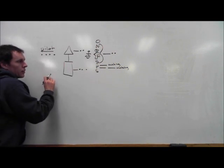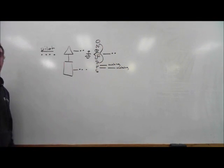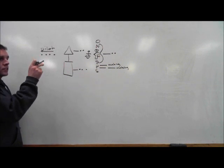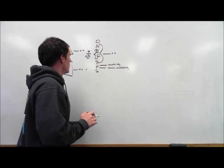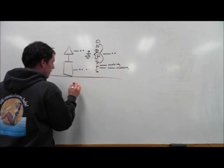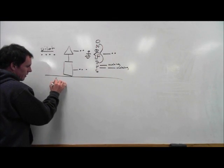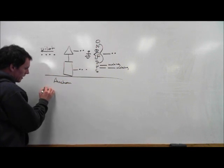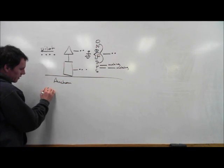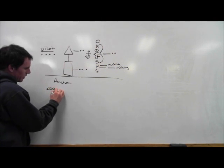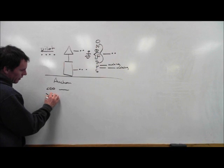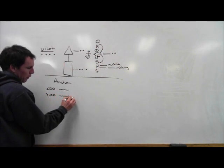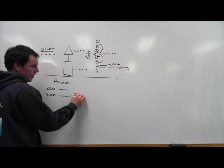These are vessels underway in restricted visibility. Whistle signals at not more than two minute intervals. And then we have our anchor. Anchored, which is a bell. Less than a hundred, rapid ringing of a bell. Over a hundred, rapid ringing of a bell in the fore part, rapid gonging of the gong in the after part.